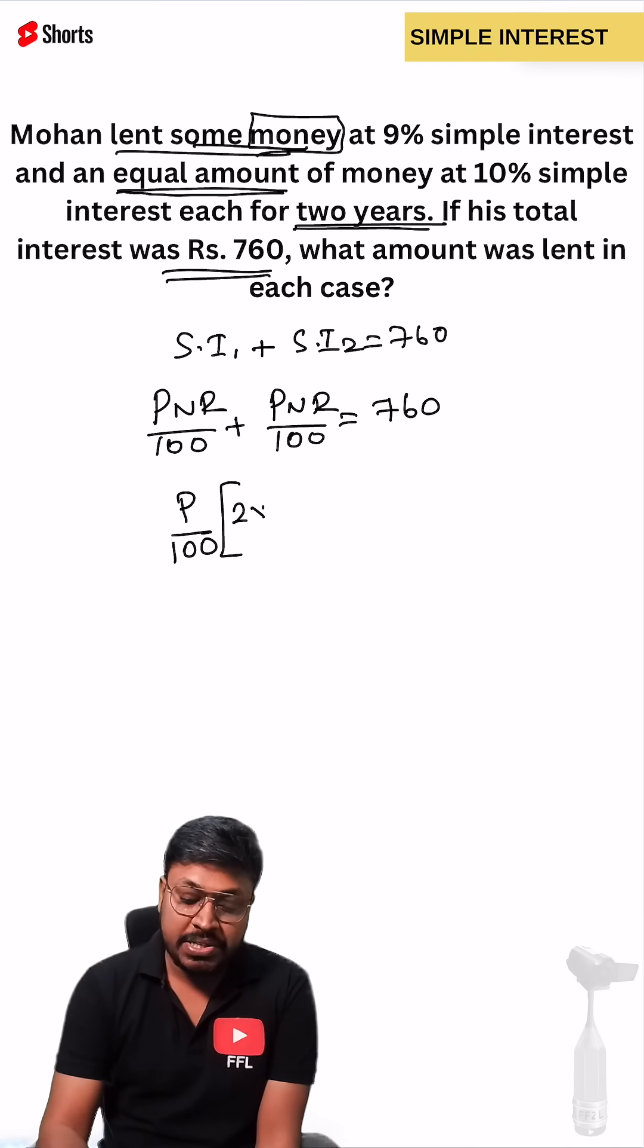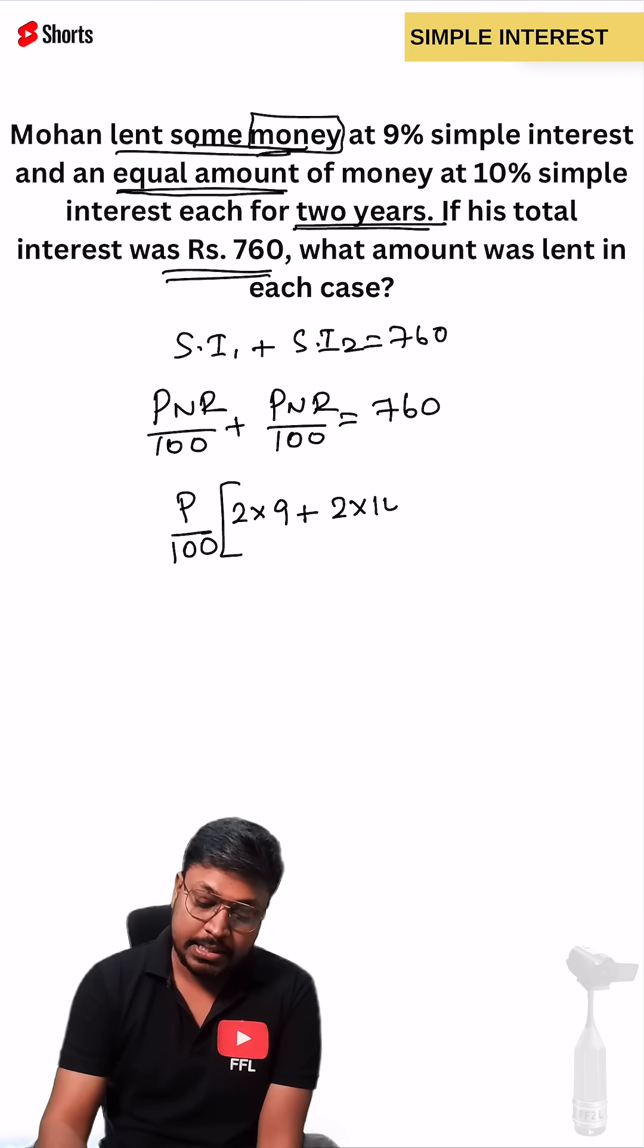Number of years, according to the question, they mentioned 2 years. Rate of interest is 9. Similarly, 2 years and the rate of interest is 10 equals 760.